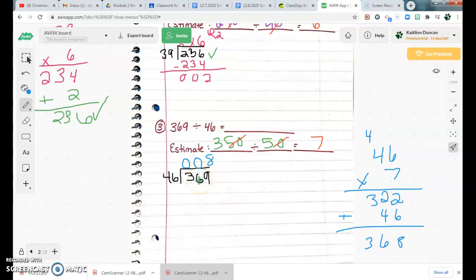I got 368, which is as close to 369 as I can get without going over. So 46 times 8 is 368. So I'm going to subtract 368 from 369. 9 minus 8 is 1. Everything else is 0. So I have a final answer of 8 remainder 1.